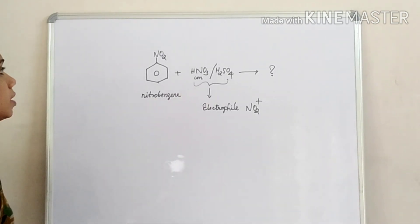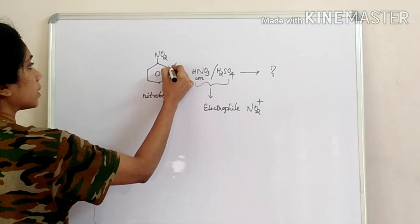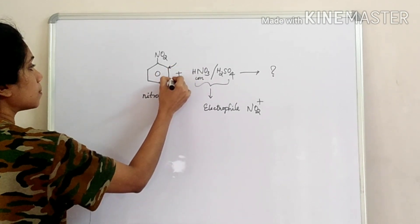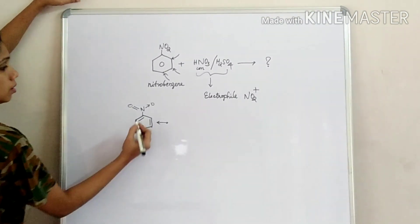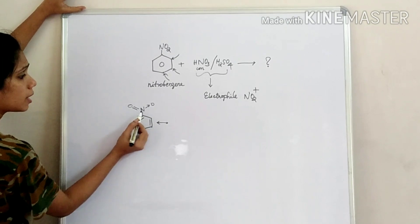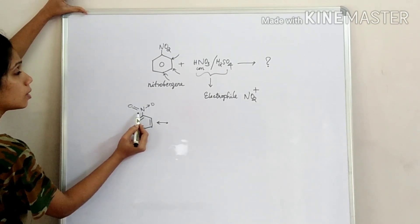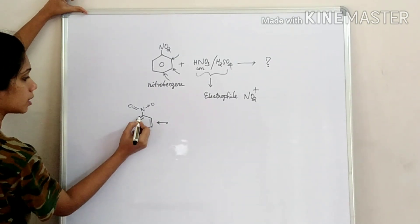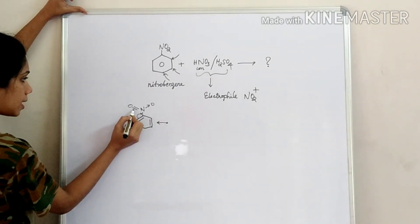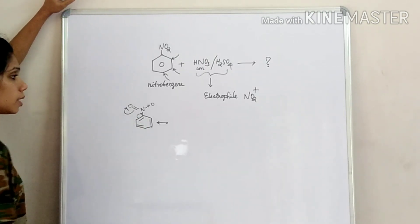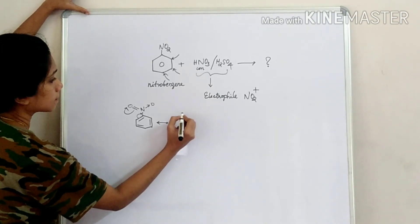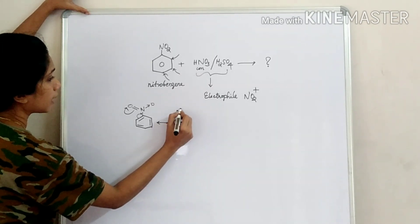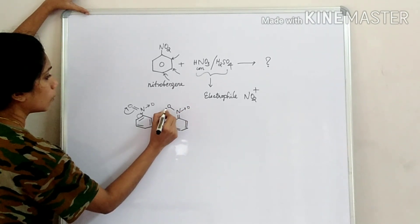In this electrophilic substitution, we consider the ortho position, meta position, and para position. This is our nitrobenzene. The NO2 group has a minus-I effect. This is the resonance structure — double bond N to O.